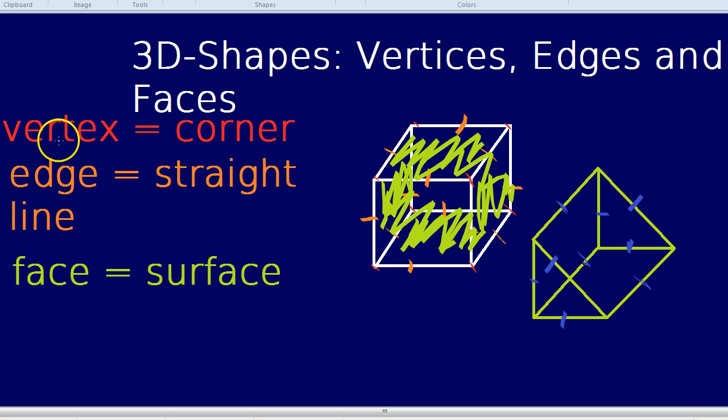How many vertices? 1, 2, 3, 4, 5, 6. So 6 vertices. How many faces? 1 on the side there, 1 at the back, that's 2. It has the floor here, 3. And the left hand side, 4. And finally the front, 5. So it has 5 faces.